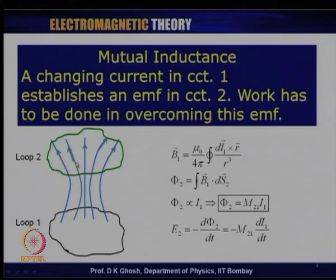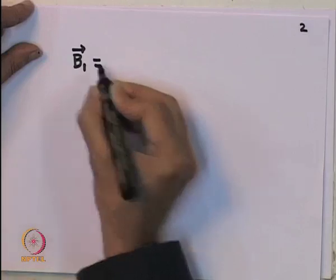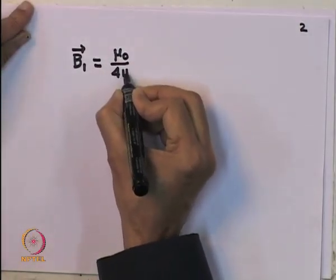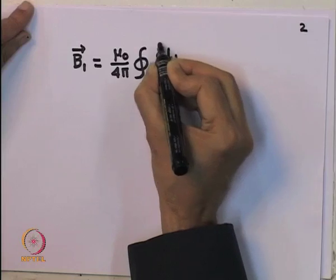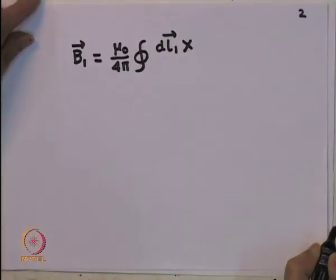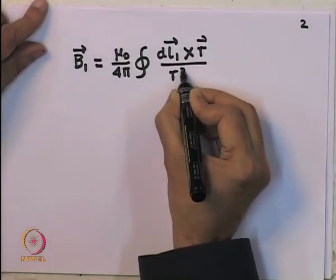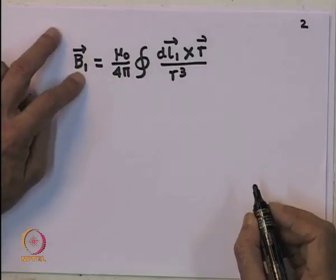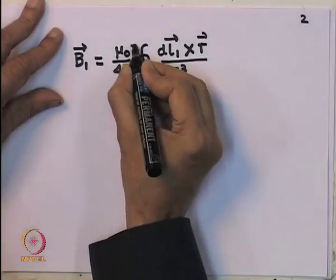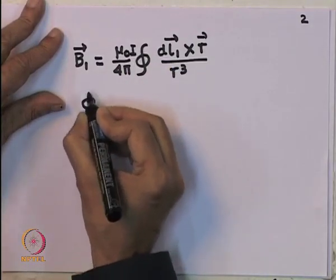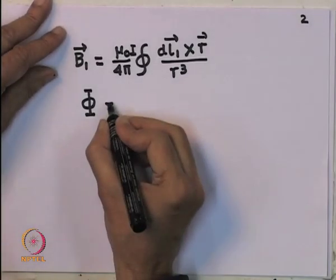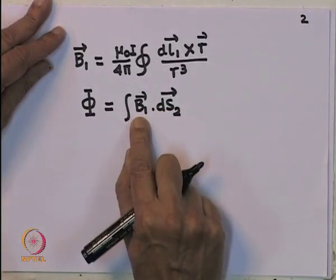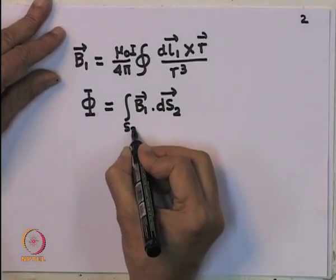Recalling Biot's law, B₁ — the magnetic field due to loop 1 — is given by μ₀/4π times the integral over loop 1 of dL₁ cross R divided by R³. This is the magnetic field produced by the current in the first loop. The flux through the second circuit is given by the integral of B₁ dot dS₂, where B₁ is the magnetic field produced by the first loop and dS₂ is the surface area element of the second loop.